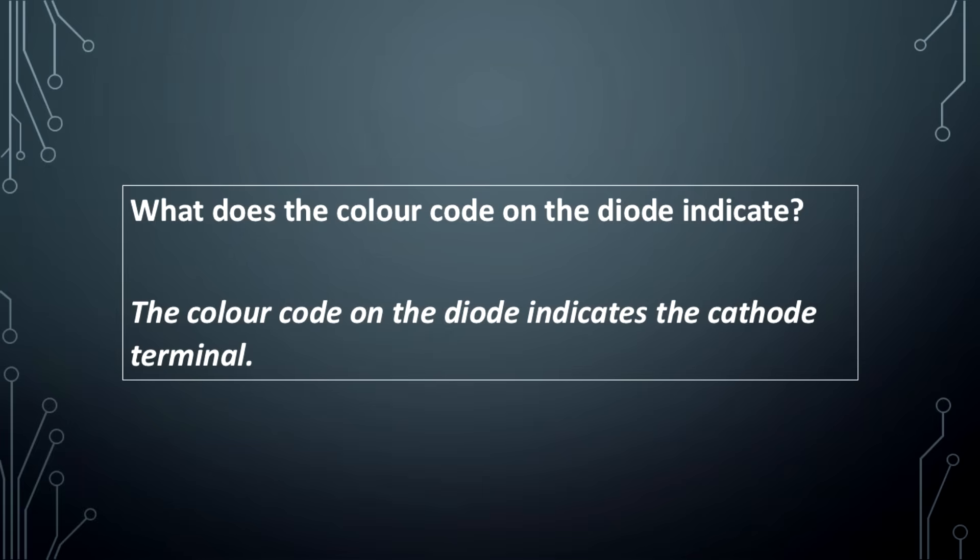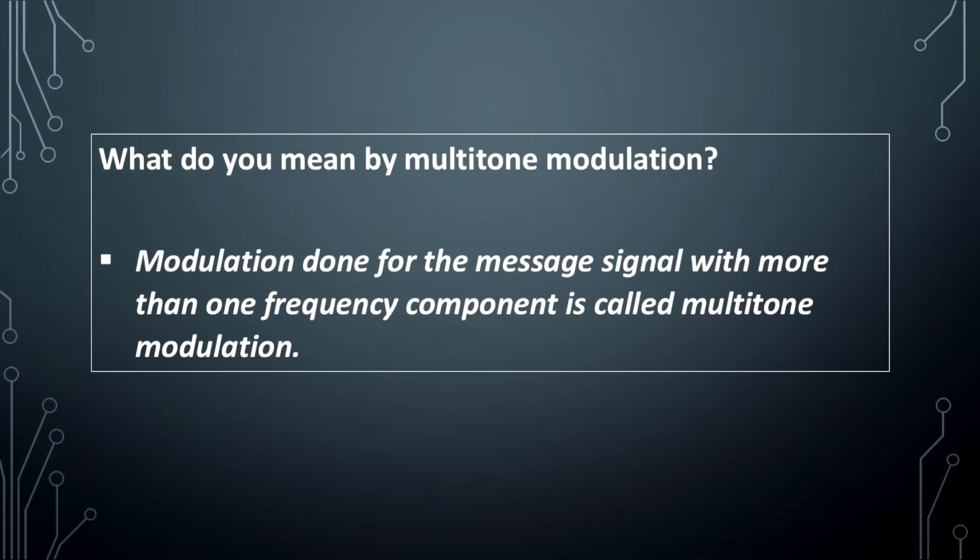What does the color code on the diode indicate? The color code on the diode indicates the cathode terminal.